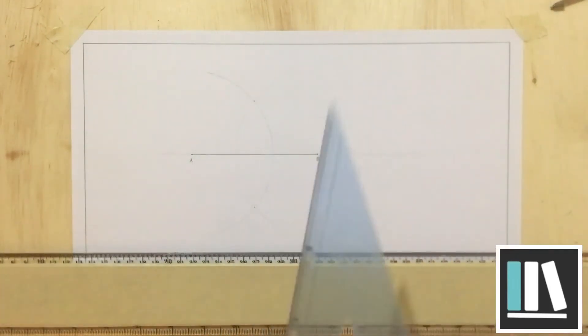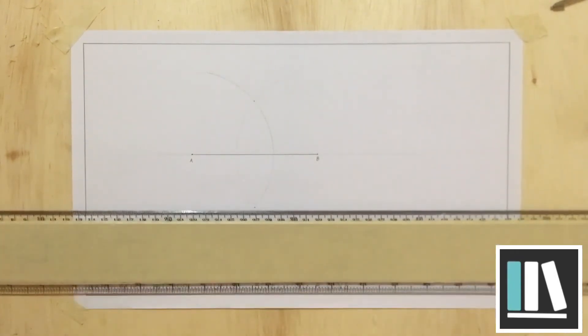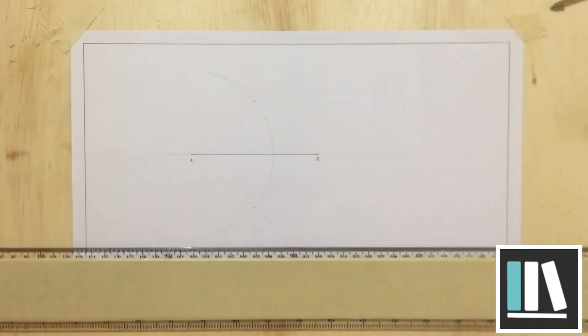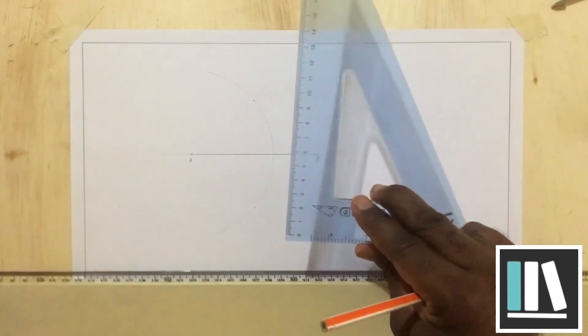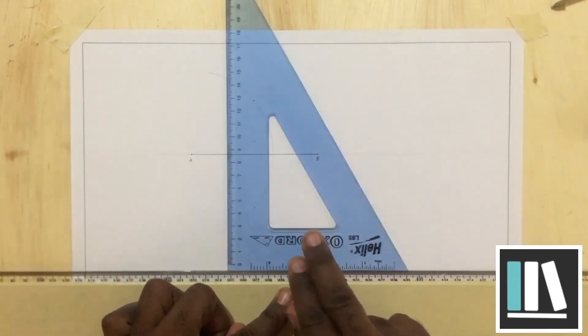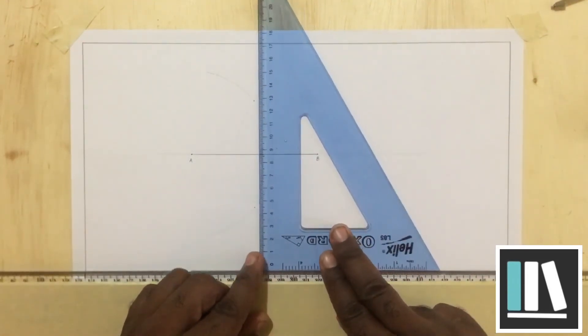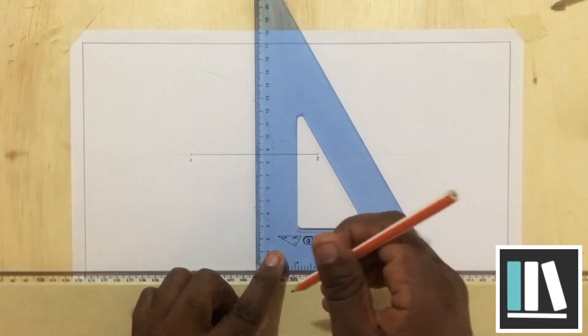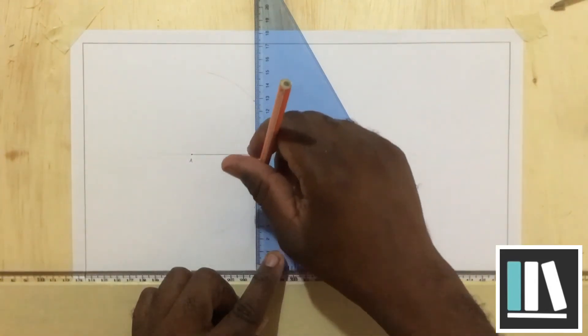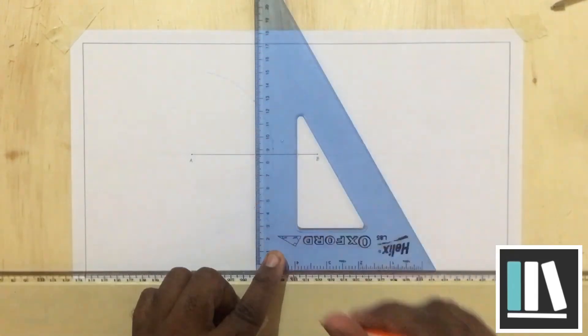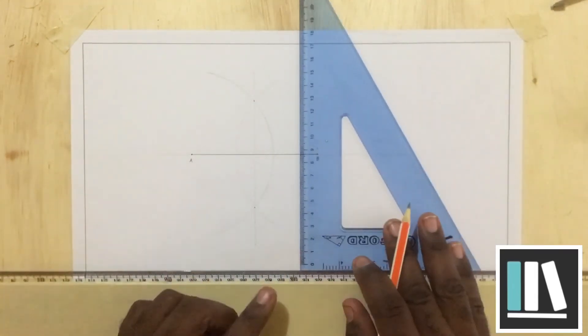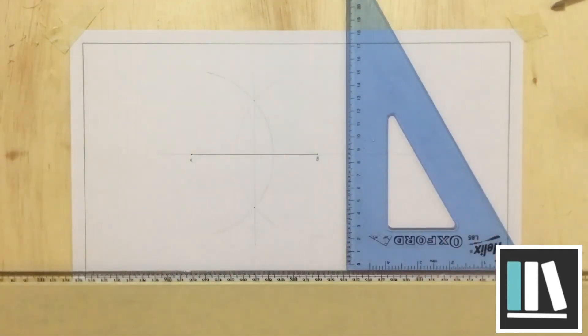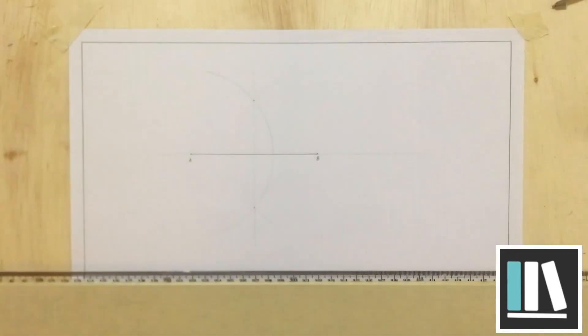You are going to ensure that your T square is sliding along the edge of the drawing table. And you are going to ensure that the set square is sliding along the T square. You are going to slide it until it is in line with the points that were created. Then, you are going to use a construction line to pass through the points. When you have this, you have successfully bisected your line. And it should be in two equal parts.